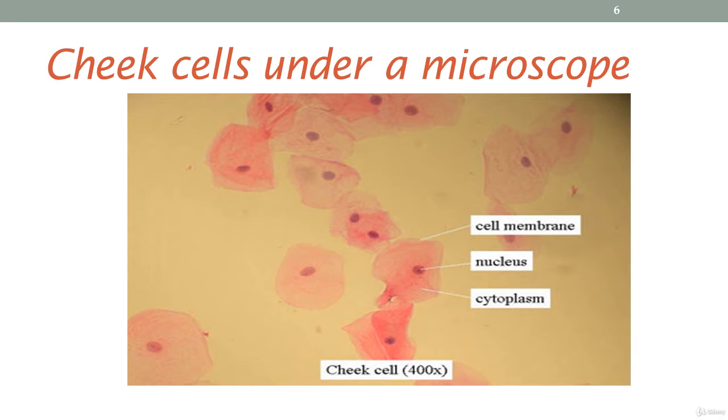Here we have some human cheek cells that can be seen under a light microscope. In this instance, it has been magnified up to 400 times. At this magnification, all of the organelles are not visible, and this is basically because the magnification is quite low.